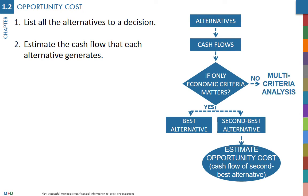Then, these alternatives need to be compared to each other. From an economic perspective, you compare how much money, called cash flows, each of the alternatives generates. The alternative that generates the most cash flow is the preferred alternative.